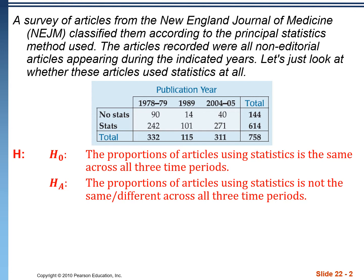We have a table here with information on whether articles from the New England Journal of Medicine either have statistics or don't have statistics. Since we have three different samples, this is a test of homogeneity. We want to see if these proportions stay the same across these three samples. Our null hypothesis would be that the proportion of articles using statistics is the same across all three periods. The alternative is that it's not the same.